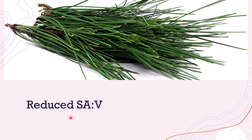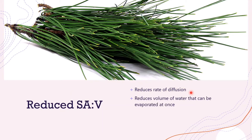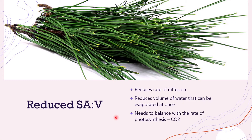And lastly, reducing the surface area to volume ratio. The surface area to volume ratio goes hand in hand with the rate of diffusion, so if we reduce this ratio, we reduce our rate of diffusion and hence the volume of water that can be evaporated at once. Even though we reduce the rate of water diffusion out of the plant, we still need to balance this with the rate of photosynthesis — so we still need a surface area to volume ratio large enough to provide the entire plant with carbon dioxide for photosynthesis.